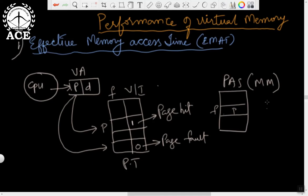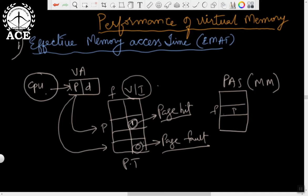I am summarizingly discussing the virtual memory concept. Remember we said that a running program will generate the virtual address. Using the virtual address, we divide that into page number and offset. Using the page number, we index into the page table. It may lead to either a page hit — page is found in memory — or it may lead to a page fault, meaning the page is not present. By looking into the valid-invalid bit of the page table, one can know whether the page is present: if the valid-invalid bit is 1, the page is present; if 0, the page is not present.